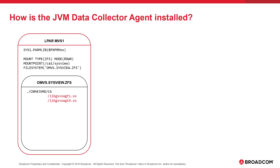During the next install job, inst3, the entire SysView product libraries are received, applied, and accepted. During this process, the SMPE-managed shared objects libgsvoagt1.so and libgsvoagt4.so are copied into the USS directory. Lastly, during the install process, the SysView Data Collector Agent runtime is created by copying the SMPE shared objects from their directory into another directory within the same ZFS. The low-level directory structure will be runtime/jvmdata/bin.